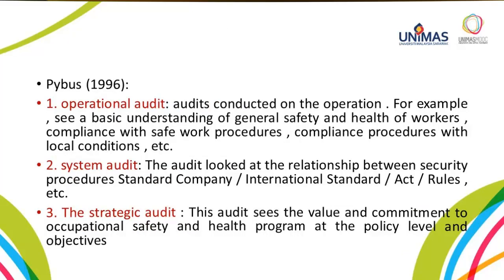Pibus 1996 also stated three types of safety audit. The first one is the operational audit, which is conducted on operations — for example, it examines basic understanding of general safety and health of workers, compliance with safe work procedures, compliance with legal conditions, and so on. The second one is the system audit, which looks at the relationship between security procedures, company standards, international standards, acts, rules, and so on. The third type is the strategic audit, which examines the value and commitment to the occupational safety and health program at the policy level and objectives.